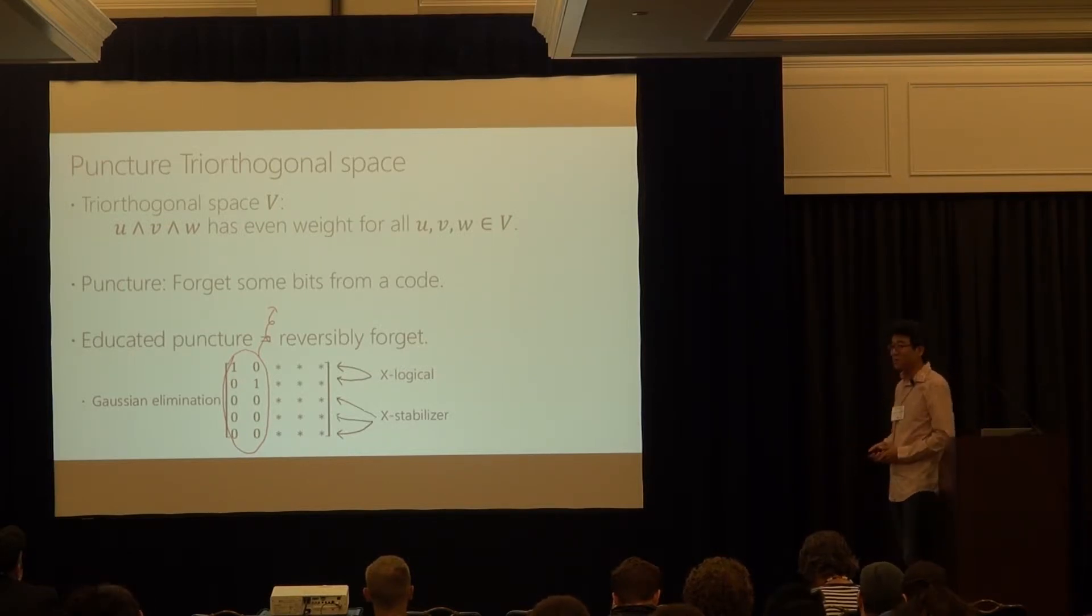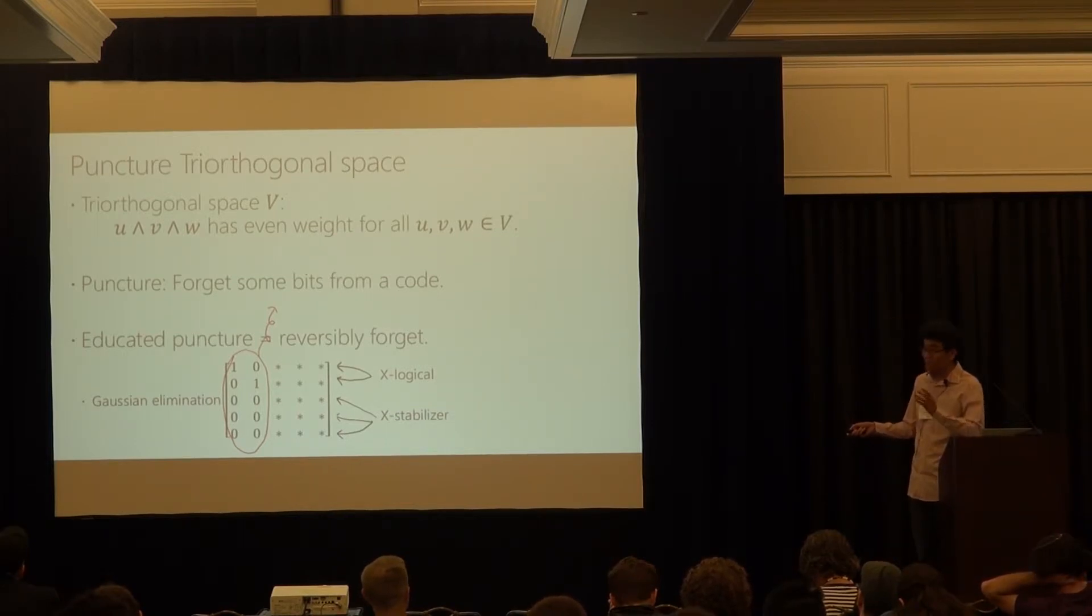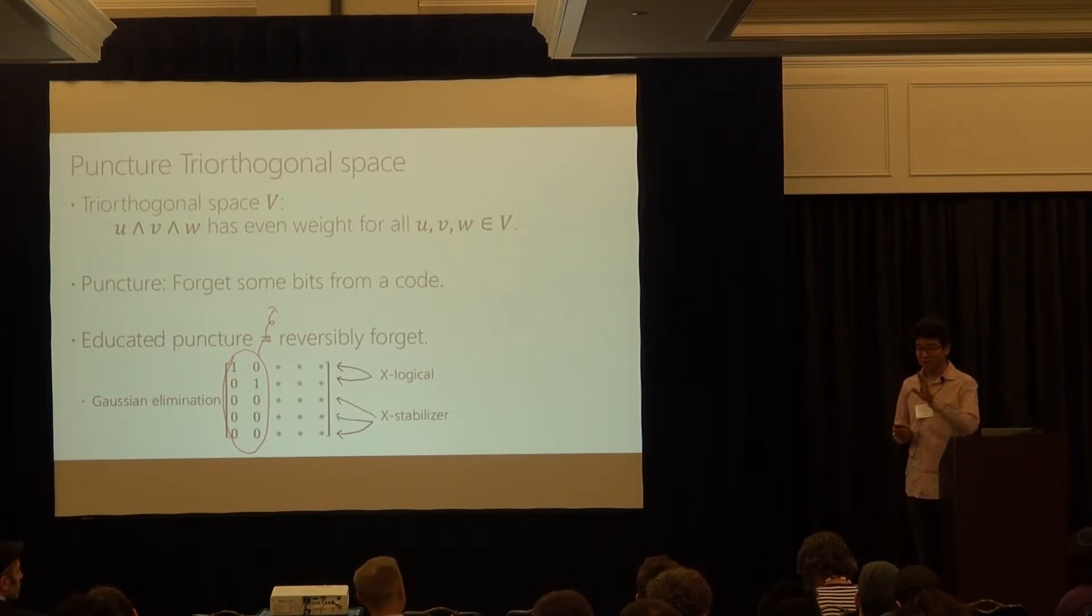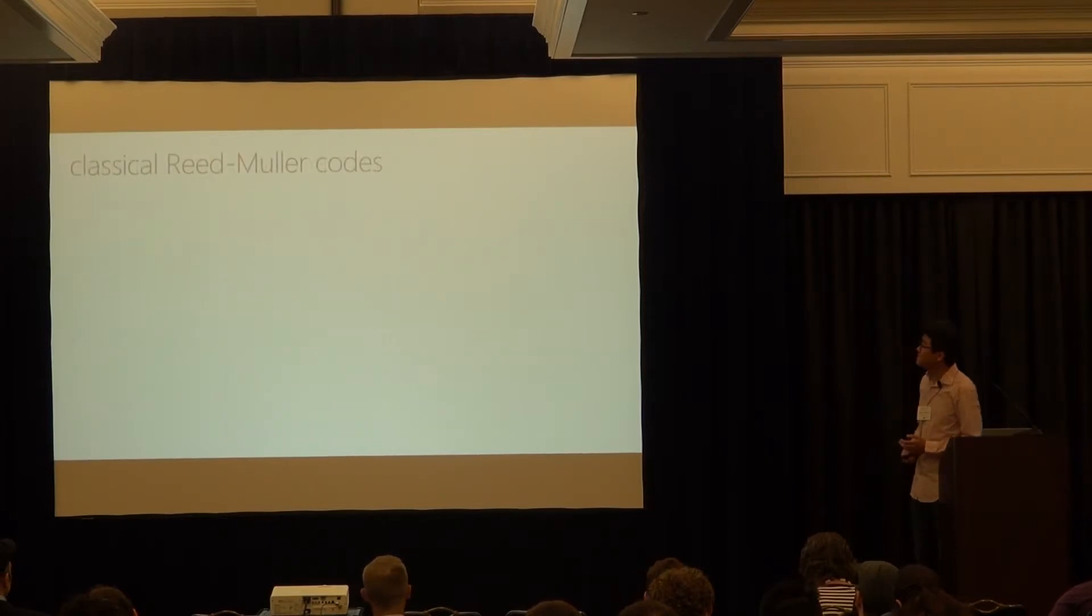So just write down any basis for your triorthogonal space and then bring the columns that you want to puncture to the front and run the Gaussian elimination that, and that will give you the matrix in this form. There are identity matrix on the top left and all the others. And I will call this part X logical and that part X stabilizer by removing the first two. Well, if you're familiar with the triorthogonal matrices before, then you will immediately see that this part is a subspace of triorthogonal space. So it by itself, triorthogonal and it has naturally even weight and the upper two rows, since I have removed just one single one, it will have odd weight, but the overlapping property will be preserved. And this is reversibly forgetting because if you give me this star part, then I figure out where the odd weight rows are. And I just attach identity matrix in front. And I declare that this space is the previous one of the permutation of columns, which is true. So this is my puncturing.